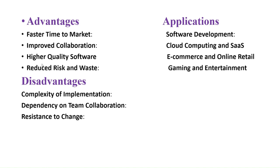Agile Development Model is user-friendly and easy to collaborate in the market. Improved collaboration means more than one team can work efficiently — coding team, testing team, monitoring team, deployment team — everyone can work collaboratively. High quality software means it provides high maintenance. Reduced risk and waste means there is less risk and less memory storage wastage.